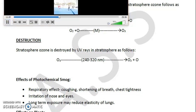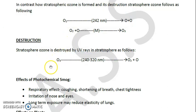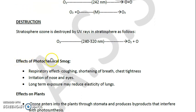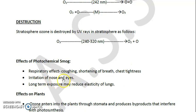This is how stratospheric ozone is destroyed. Now we will look at the effects of photochemical smog. First, the respiratory effects: it can cause coughing, shortening of breath, and chest tightness in human beings. It also causes irritation of the nose and eyes, and long-term exposure may reduce the elasticity of lungs — the pleural membrane will get damaged.